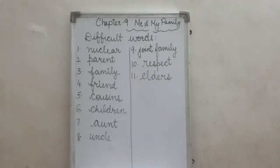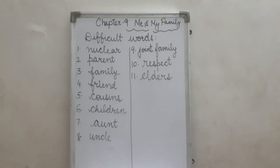Number 7, aunt. A-U-N-T. Aunt. Number 8, uncle. U-N-C-L-E. Uncle.